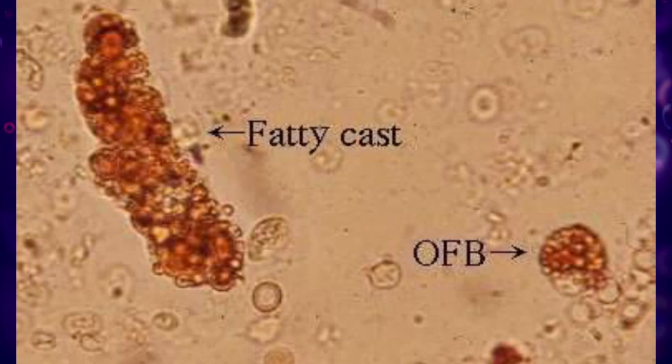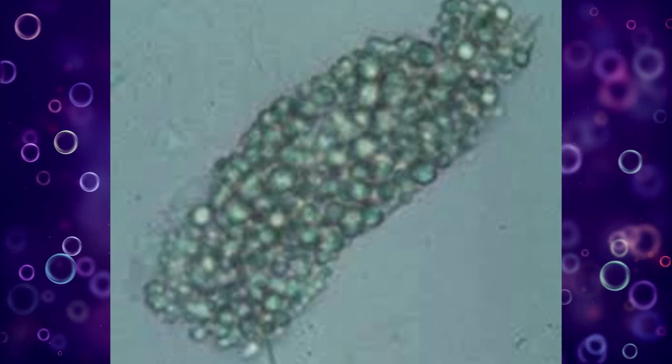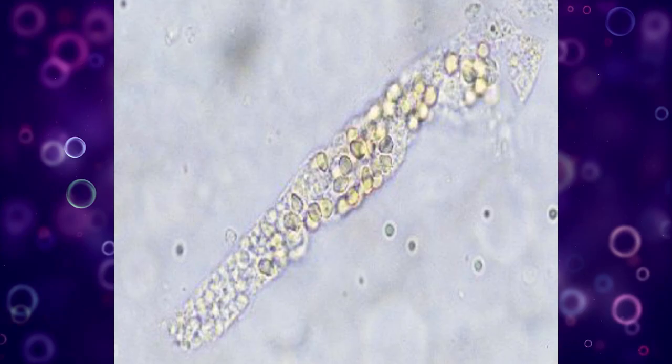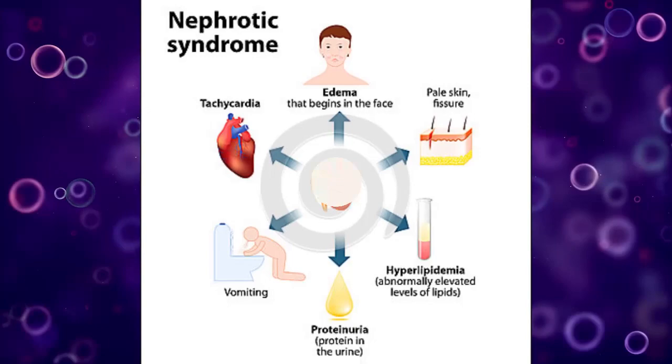Fatty casts are formed by the breakdown of lipid-rich epithelial cells. These contain lipid droplets within the protein matrix of the cast and are identified by the presence of refractile lipid droplets. They are usually seen in conditions like tubular degeneration, nephrotic syndrome, and hypothyroidism, frequently associated with heavy proteinuria.